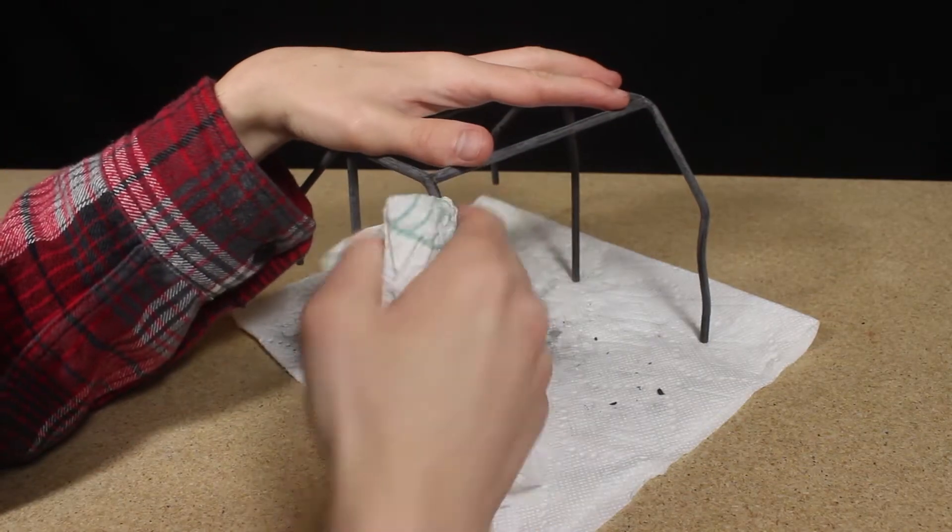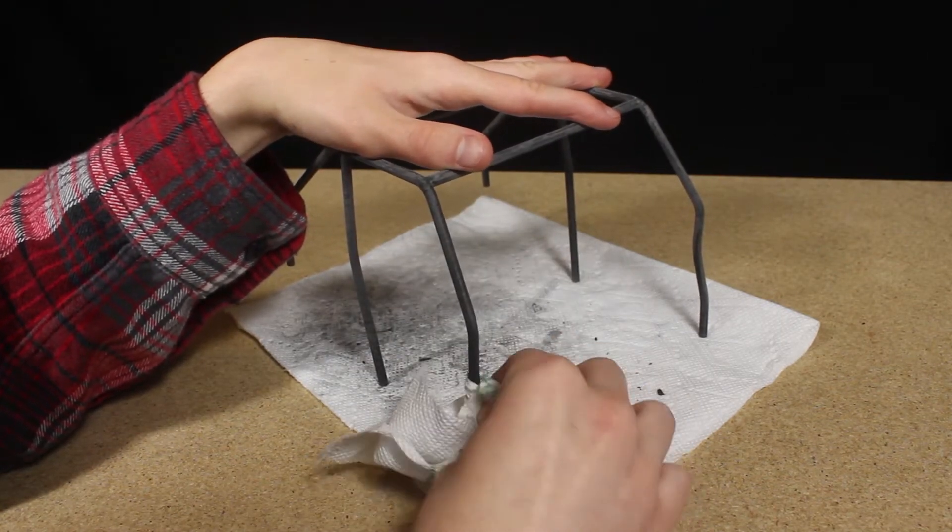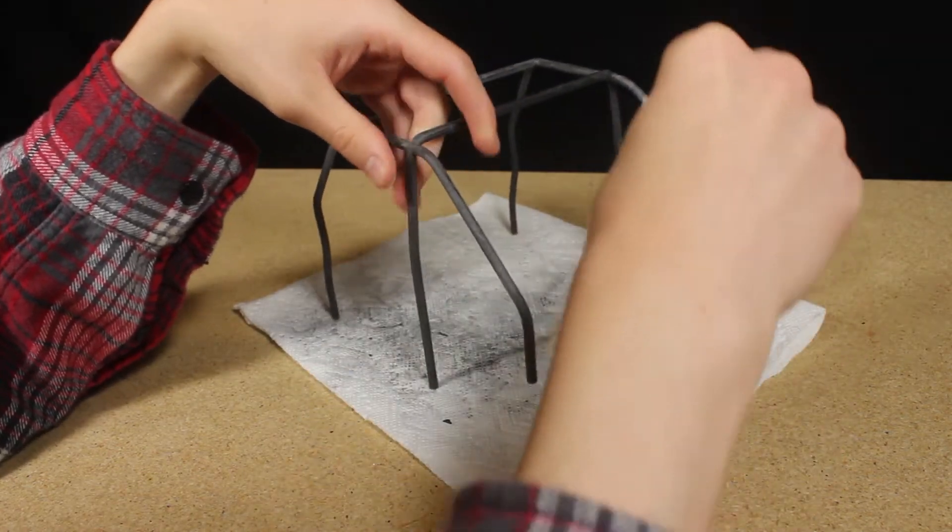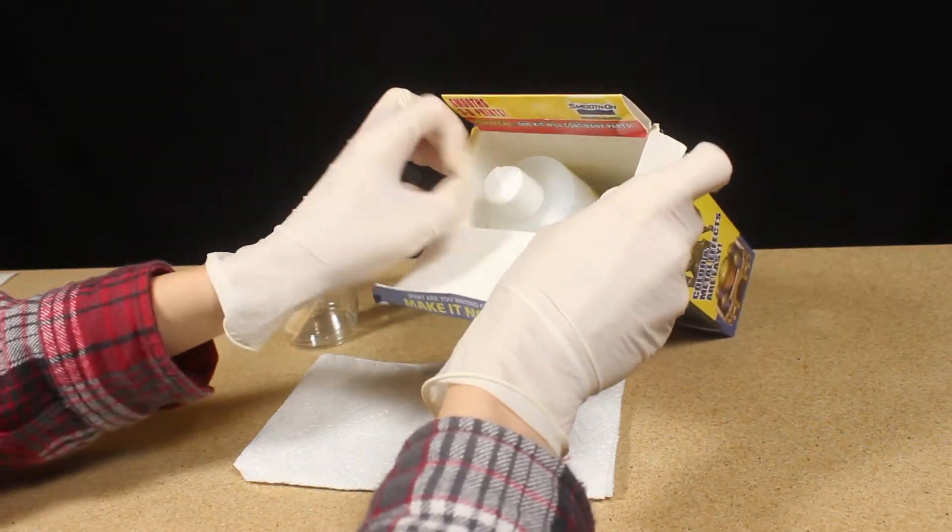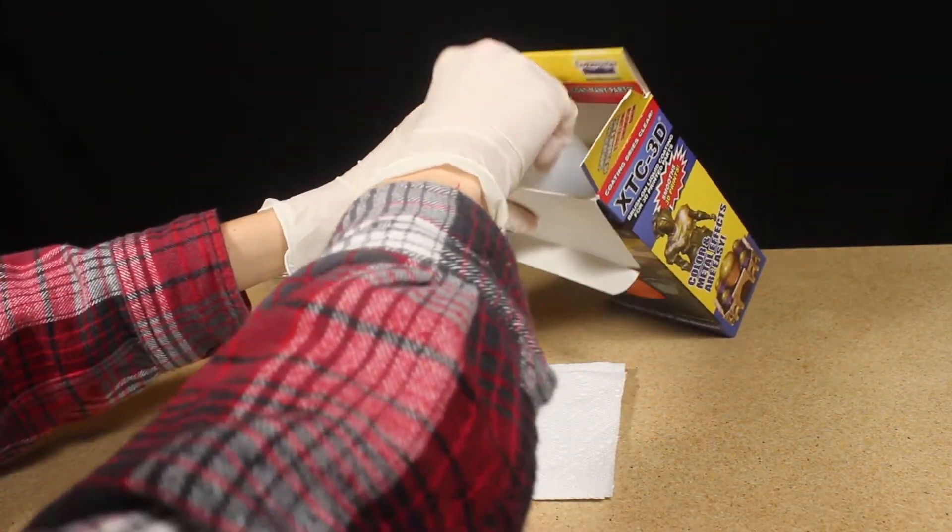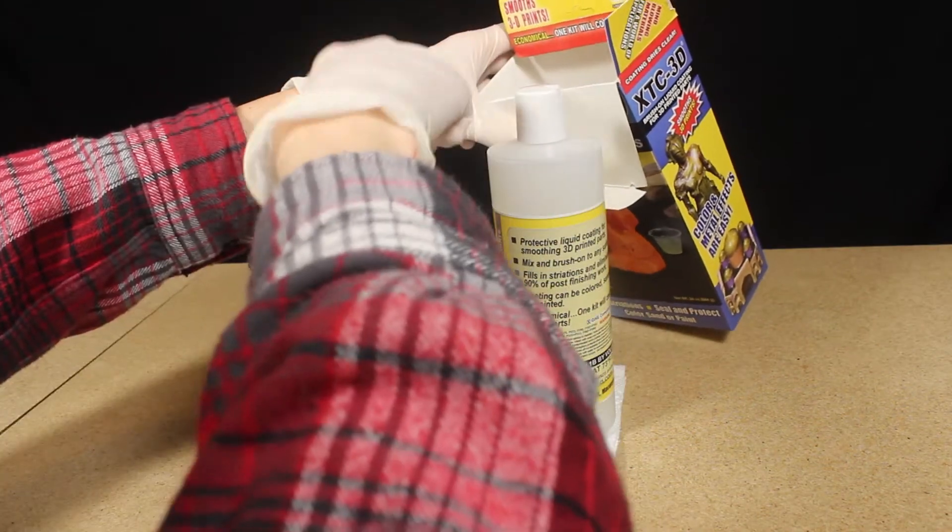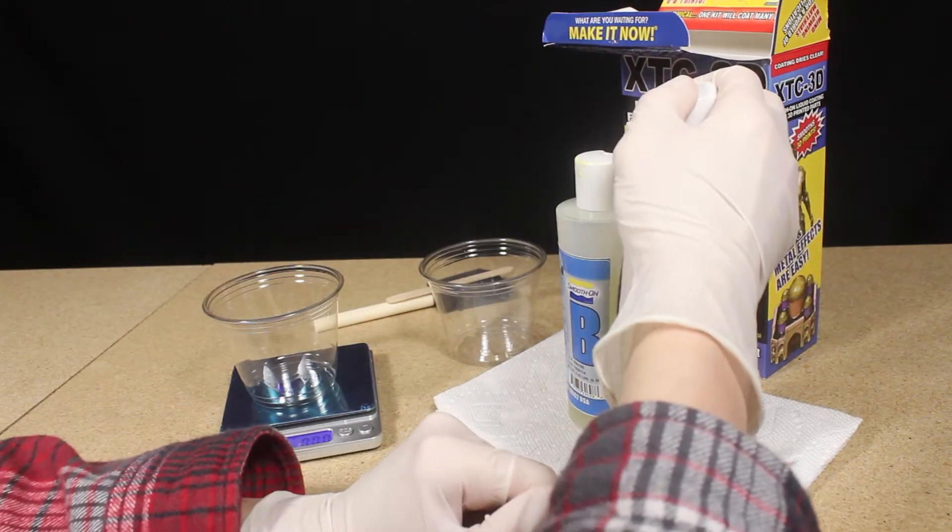Next I wiped off the dust created by the filing and sanding in preparation of the resin coating. Now I can begin to apply the XTC 3D coating. This product is pretty popular among those in the 3D printing community. If you're unaware of it, it's basically a resin coating that is brushed onto the surface of a 3D printed part that creates a smooth glossy surface finish that can be sanded and painted if desired.